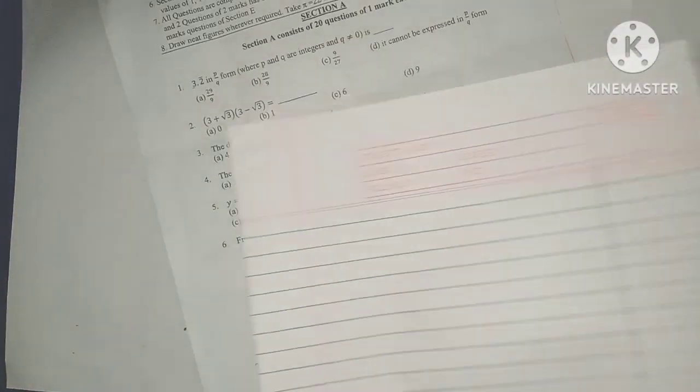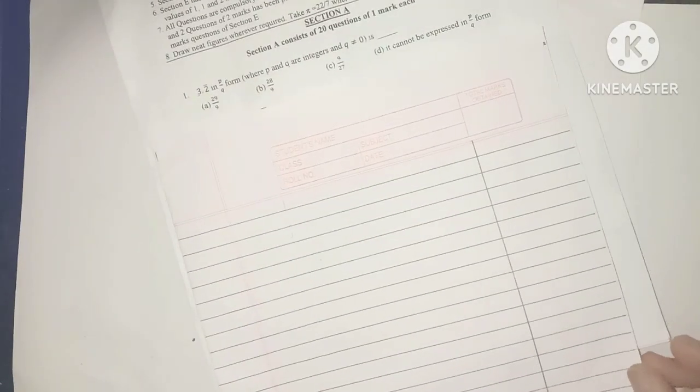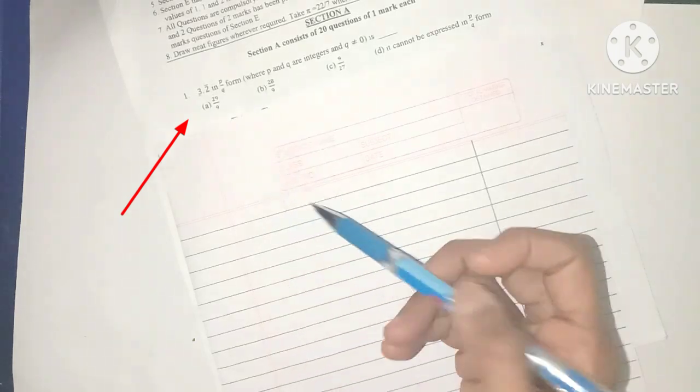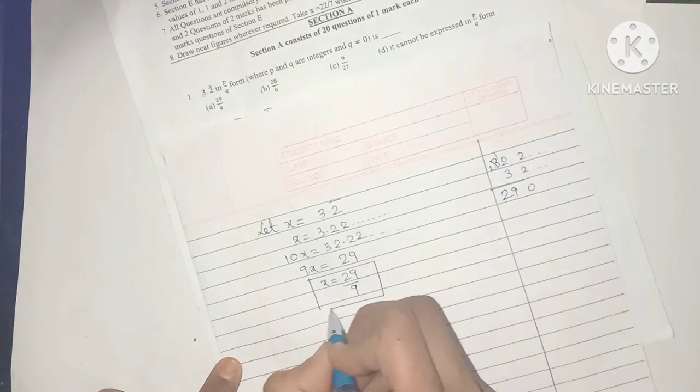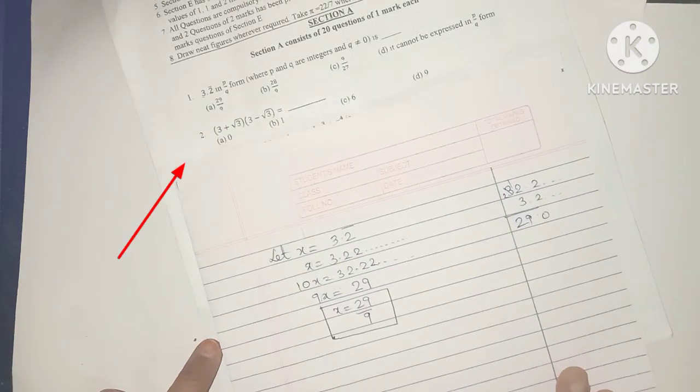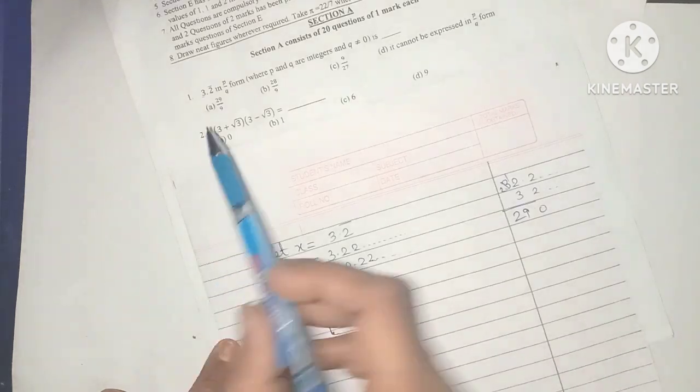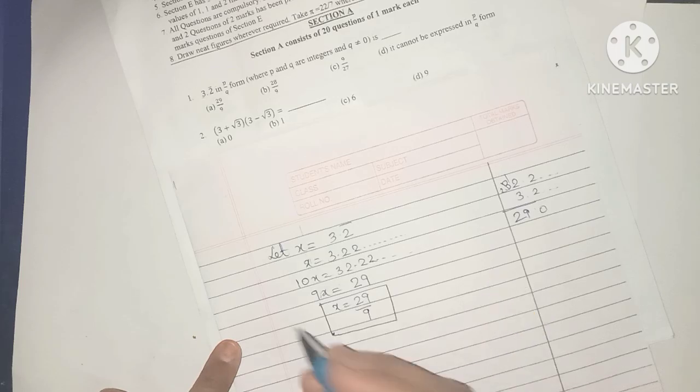Simply place your answer sheet or maybe even your pencil box just below the question you're currently answering like this. Once you're done with that question, then only shift your box or the paper down so that you can see the next question. This will surely prevent you from missing out on any question. So do try this out and let me know if this works for you.